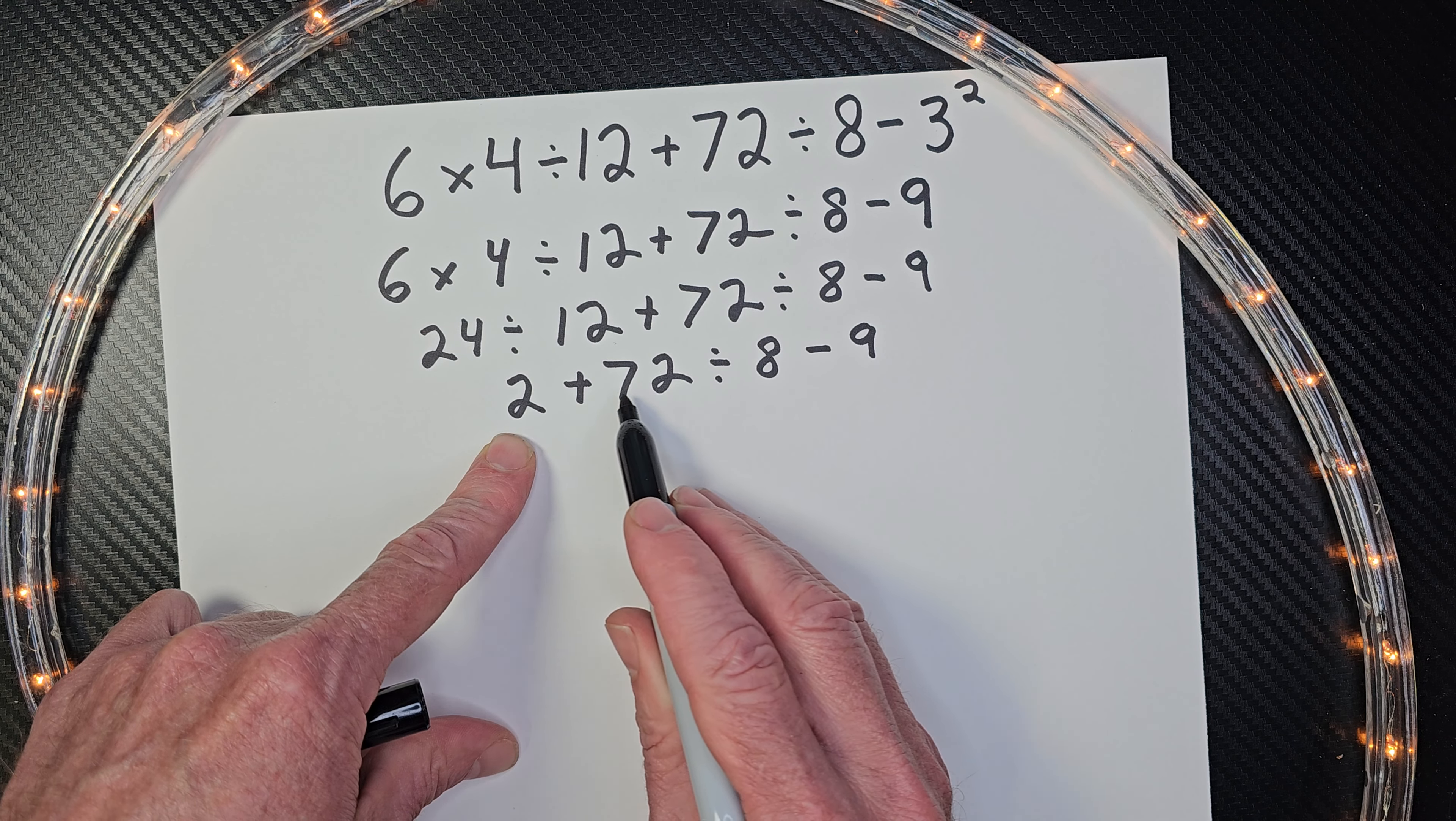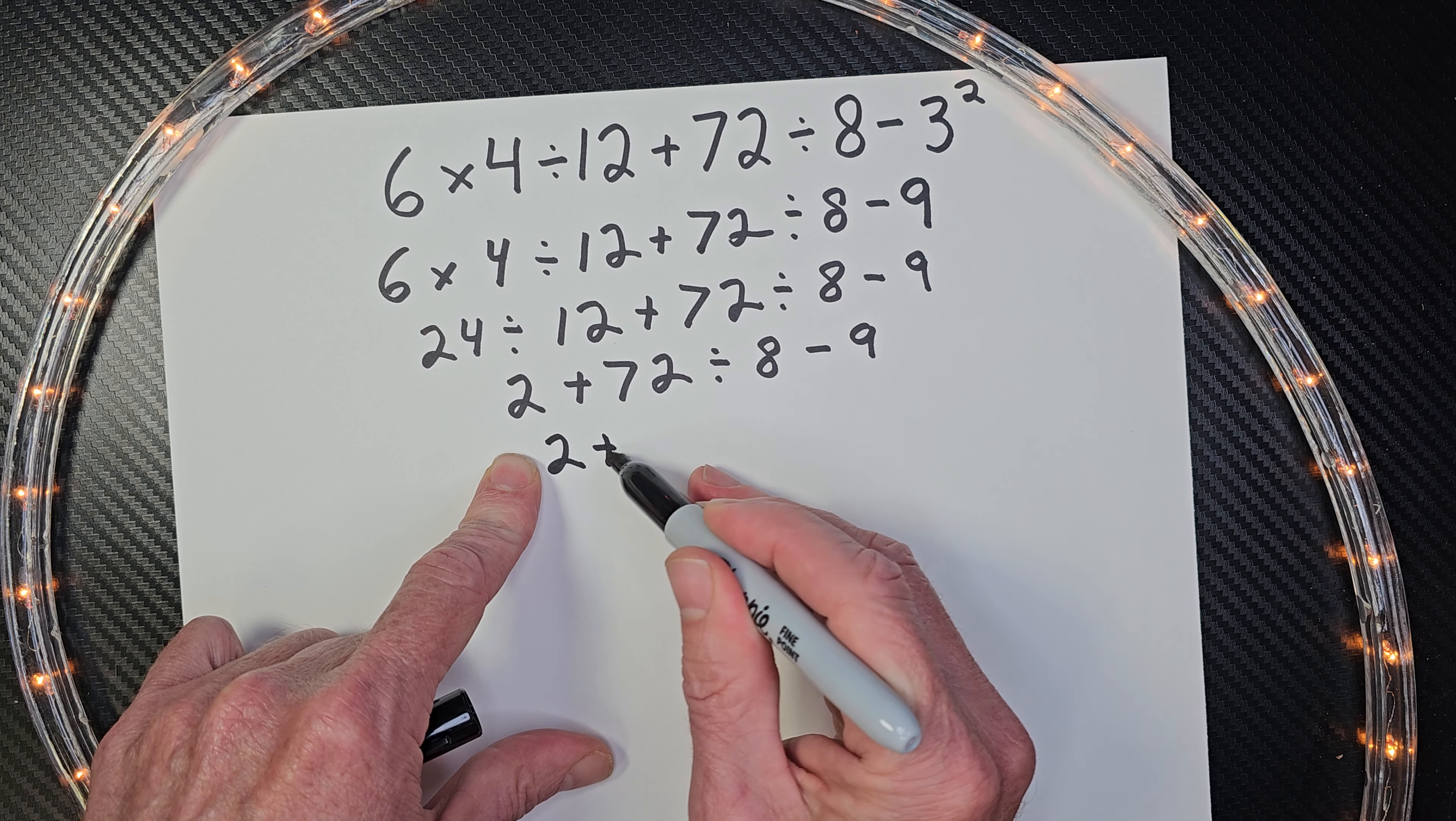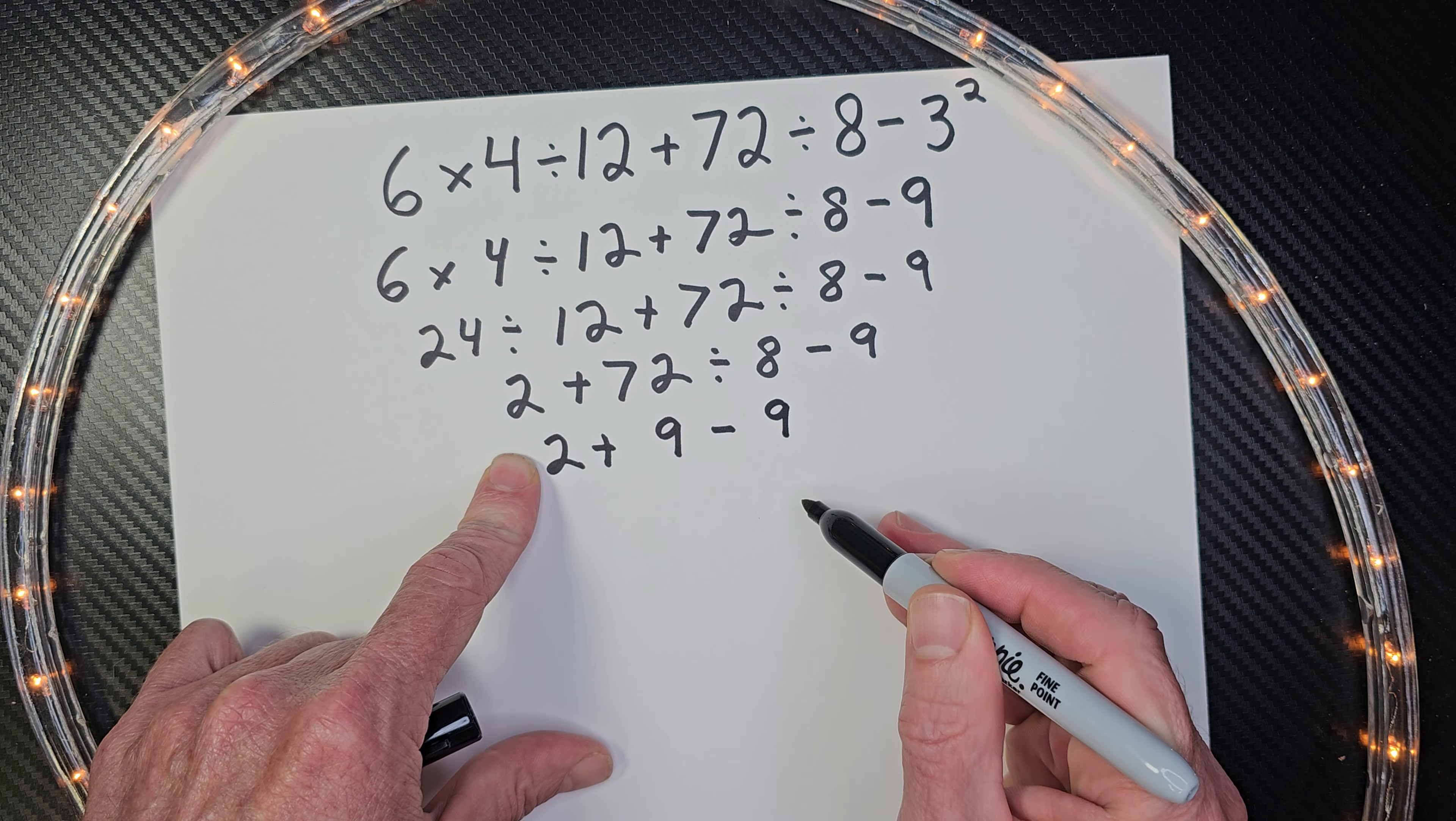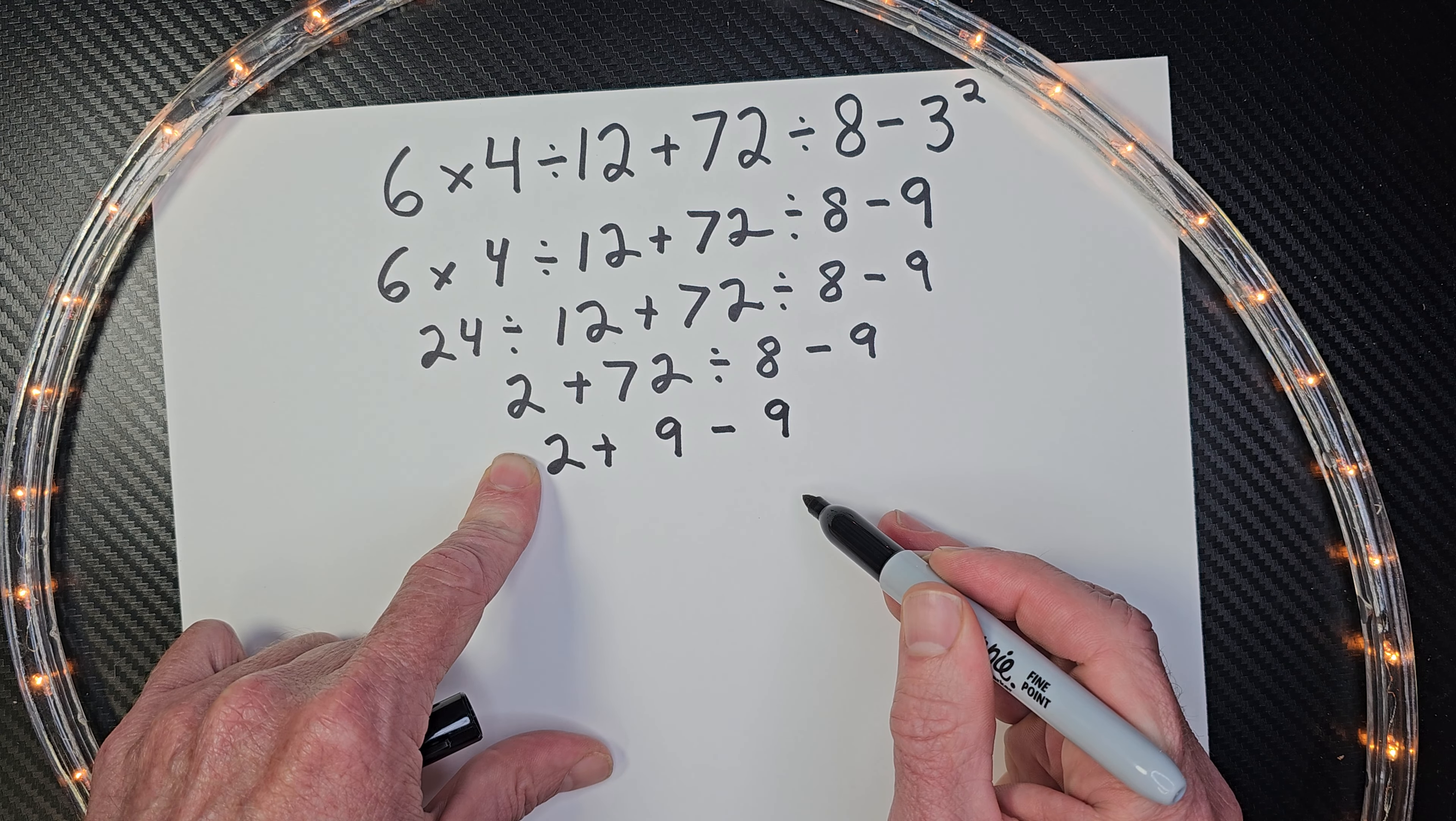So let's go ahead and do 72 divided by 8. What is that? Remember? Let's look at that 72. 7 plus 2 would be 9. So that's one of the 9 numbers there. So 72 divided by 8 would be 9. So I'm going to go 2 plus 9 minus 9.